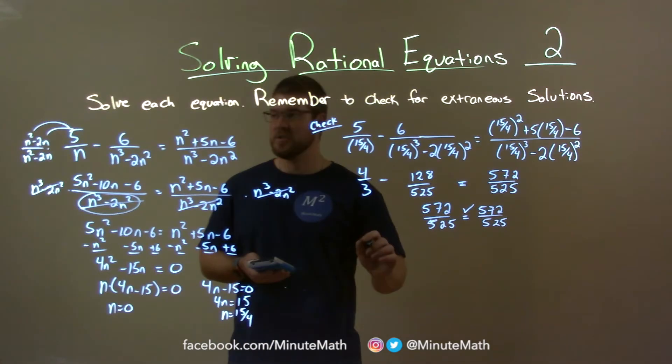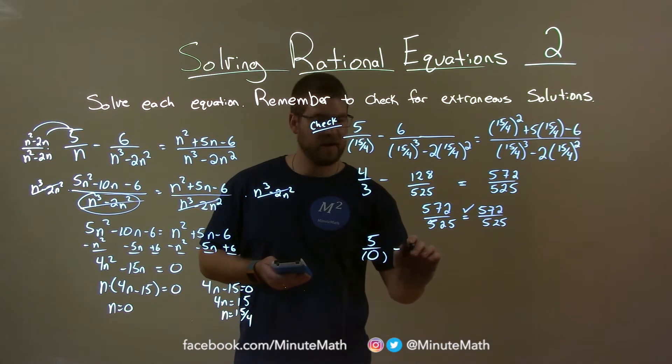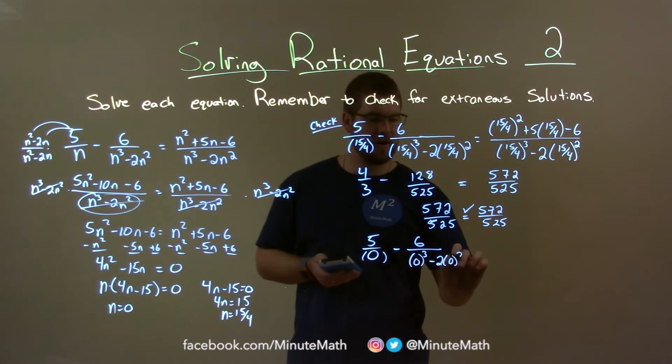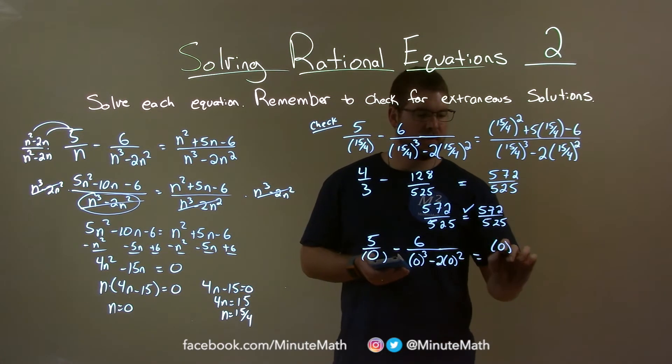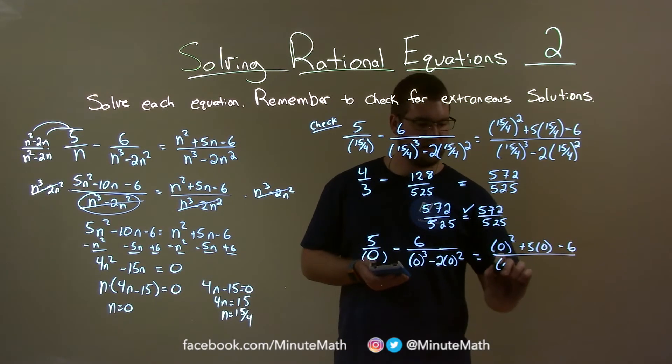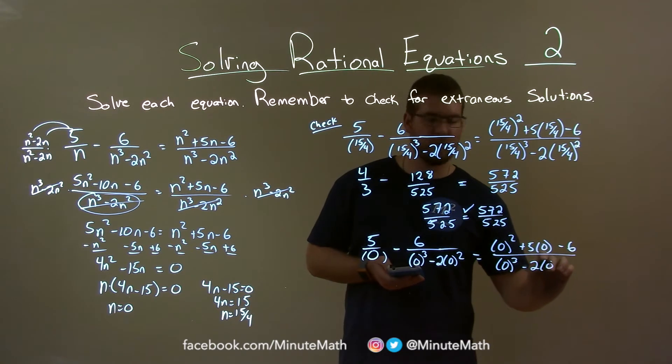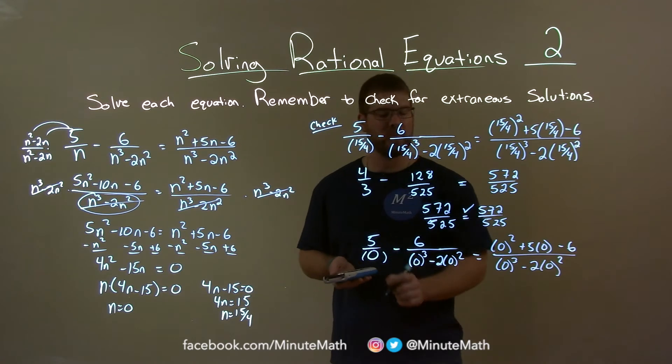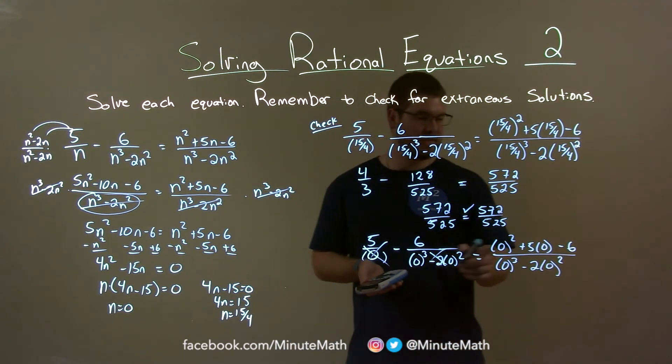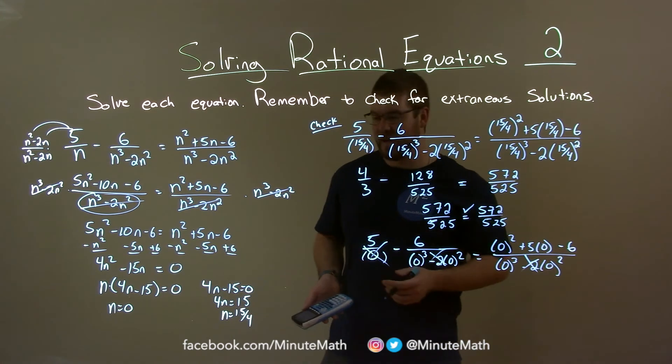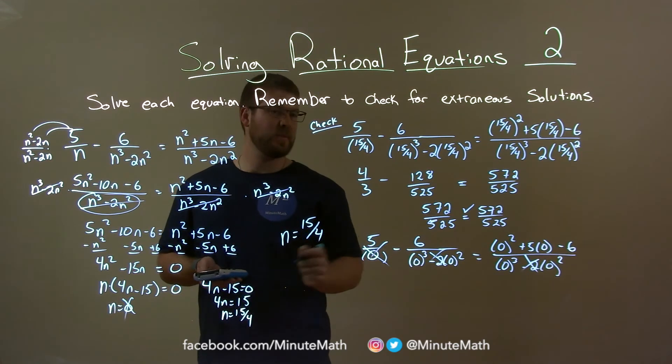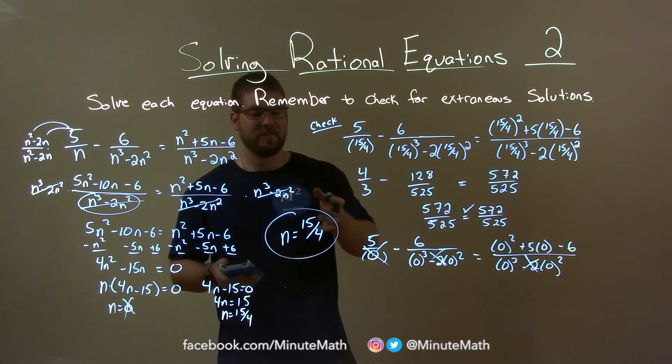What about 0? Let's plug 0 in for n and check. 5 over 0 minus 6 over 0 to the 3rd power minus 2 times 0 squared equals 0 squared plus 5 times 0 minus 6 over 0 to the 3rd power minus 2 times 0 squared. This is dead in the water right in the beginning. We can't divide by 0. It's undefined. So no, it's divided by 0 everywhere. 0 cannot work. So our only true solution, 0 is what we call extraneous, is n equals 15 over 4.